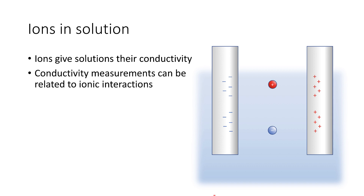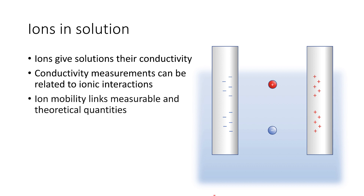Whenever we make conductivity measurements, these can all be traced back to ionic interactions — to how these ions behave in solution. The ionic mobility we discussed is a phenomenon which links the measurable quantities to do with the currents that we observe in solution, as well as the theoretical quantities in terms of the limiting conductivity of an ion.